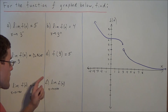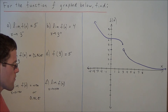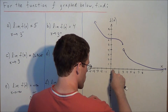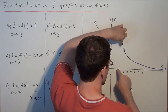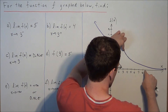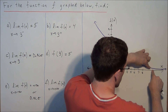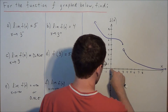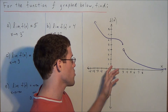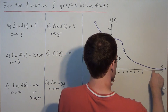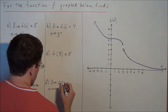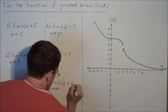Now for the last question: the limit as x approaches positive infinity of f of x. As our x values increase towards positive infinity, notice how the x-axis is a horizontal asymptote. The function values are getting closer and closer to the x-axis, which tells us this limit is approaching zero — all points along the x-axis have a y-coordinate or f of x-coordinate of zero. So as x approaches positive infinity, the function values are approaching zero, and this limit is equal to zero.